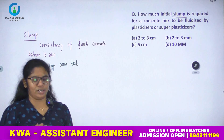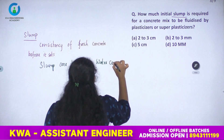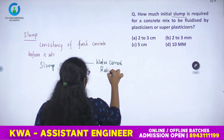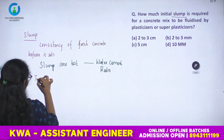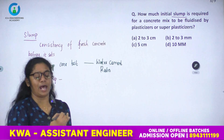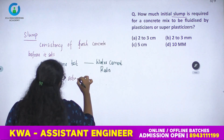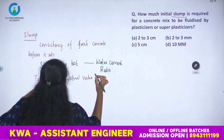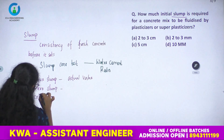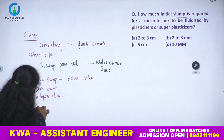The slump cone test mainly indicates the water-cement ratio. The types of slump are: true slump (the actual measured value), zero slump, collapsed slump, and shear slump.